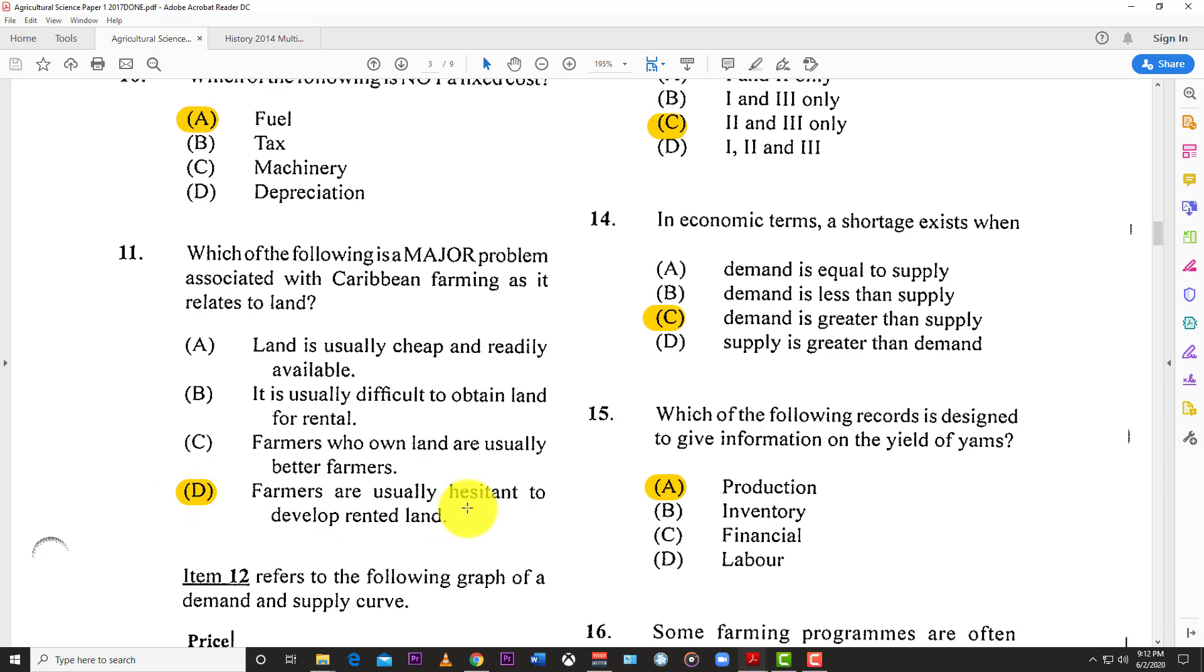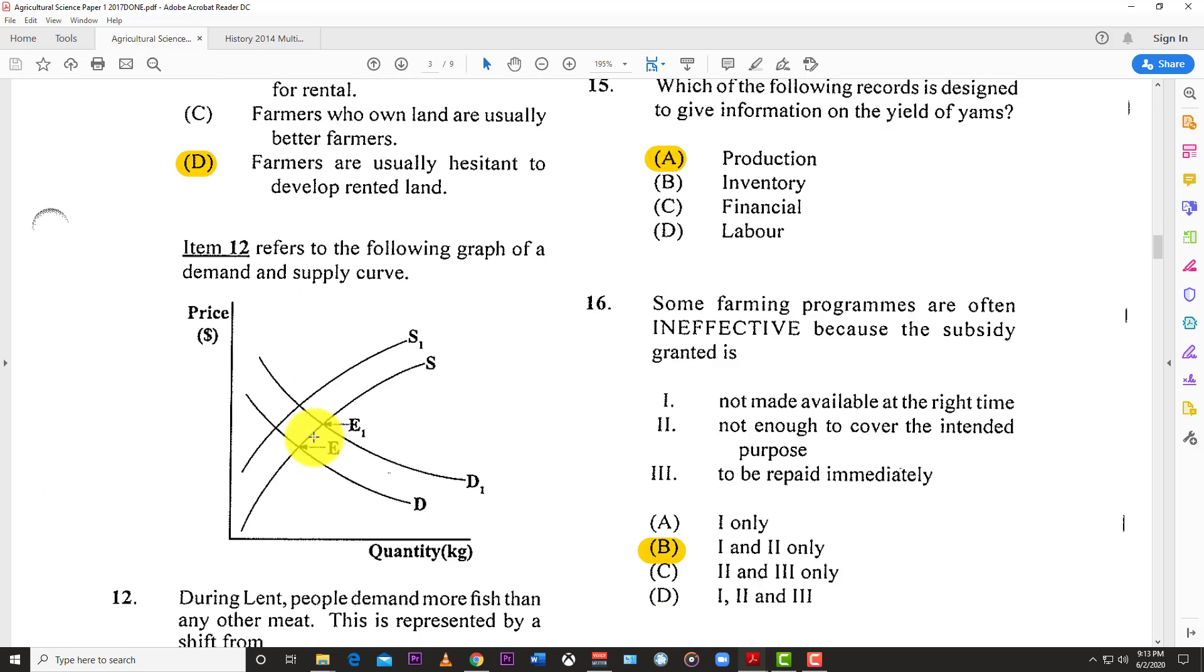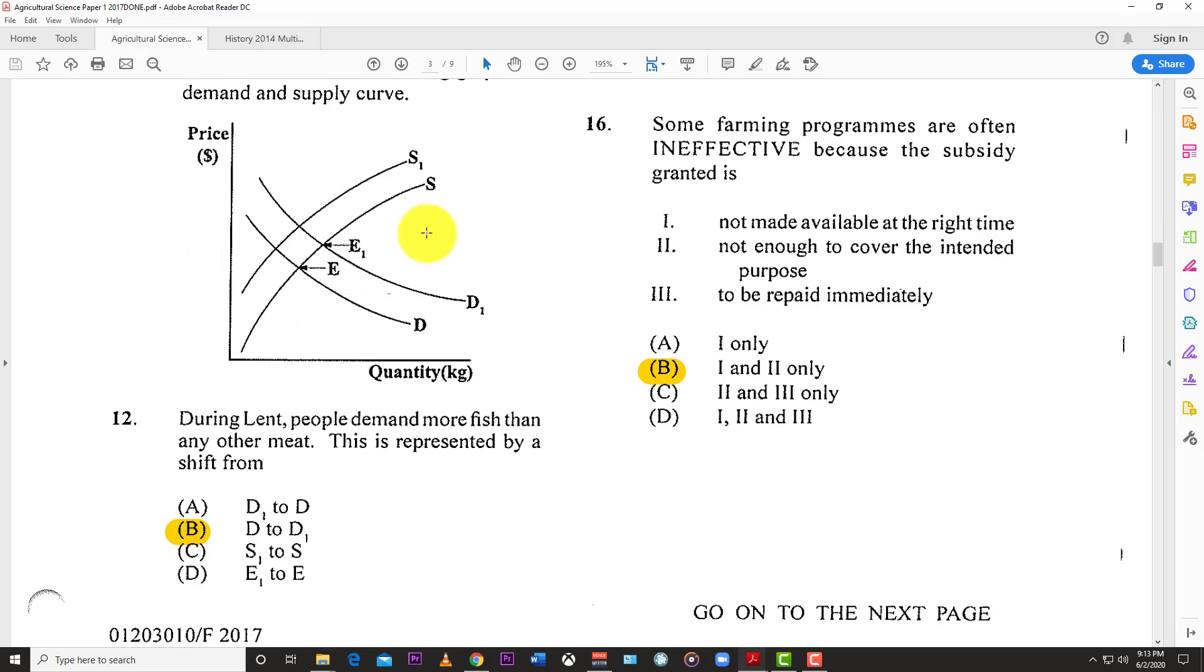Number eleven: Which of the following is a major problem associated with Caribbean farming as it relates to land? The best answer is D. Farmers are usually hesitant to develop rented land. Land tenure is an issue, so farms are hesitant to develop land that's not their own.